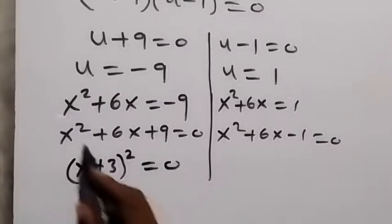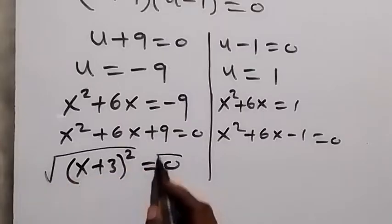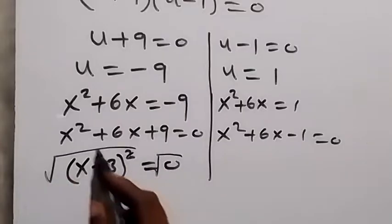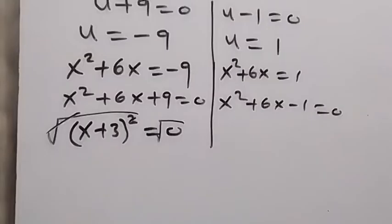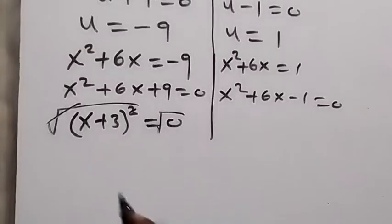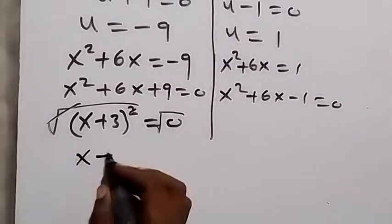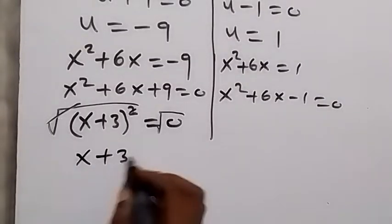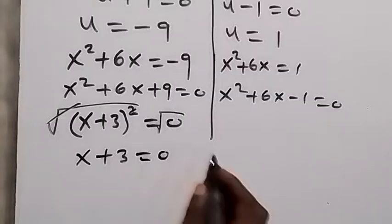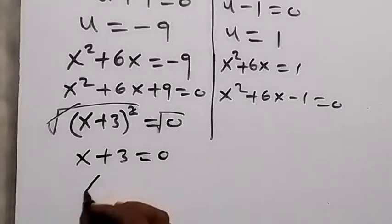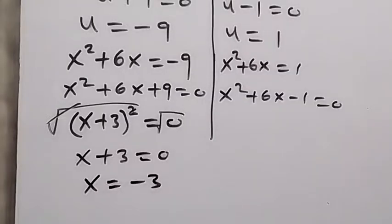The expansion of (x plus 3) squared gives us x squared plus 6x plus 9. We take the square root on both sides — the square root cancels the square — giving x plus 3 equals 0. When we take 3 to the other side, x equals minus 3.